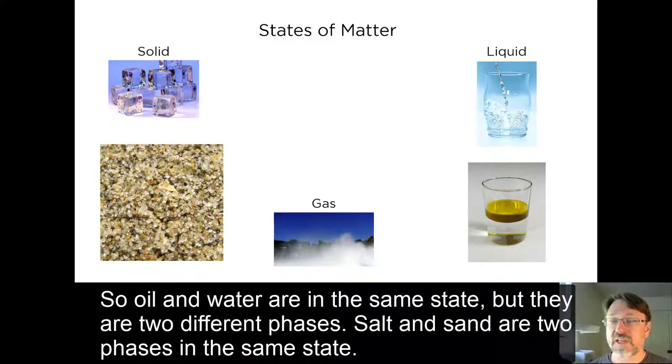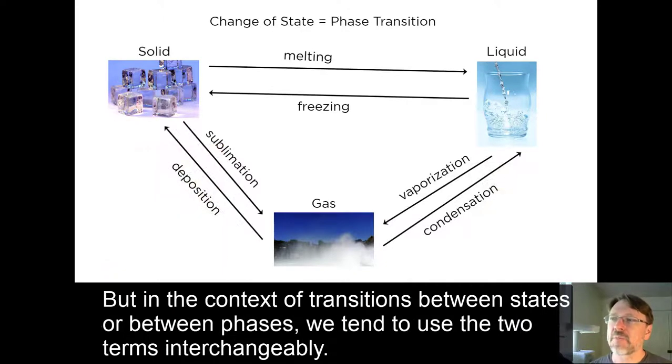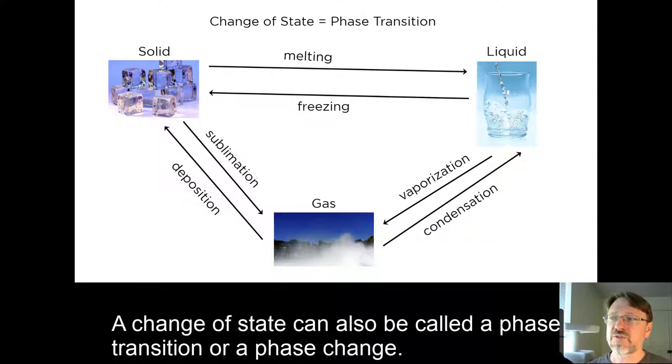Each homogeneous region in a system is known as a phase. So oil and water are in the same state, but they are two different phases. Salt and sand are two phases in the same state. But in the context of transitions between states or between phases, we tend to use the two terms interchangeably. A change of state can also be called a phase transition or a phase change.